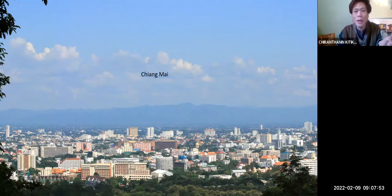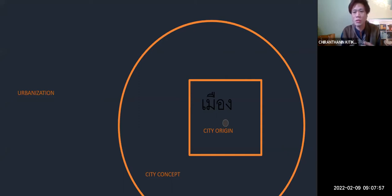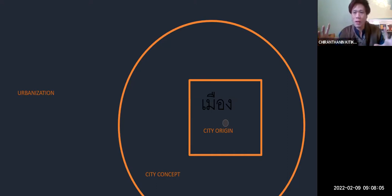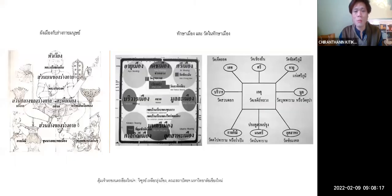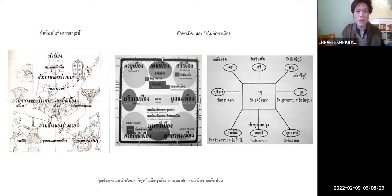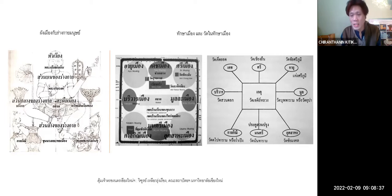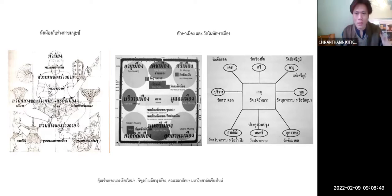This is what Chiang Mai looks like. The center is the origin of the city, and the urbanization is making the city more modern, spreading outward in circles. Originally, 725 years ago, the old city concept represented the human body — shown on the city plan with a head, two hands, and two legs. From the head to the north became Pratu Chiang Puak, or the Chiang Puak gate, which is the main entrance of the city.